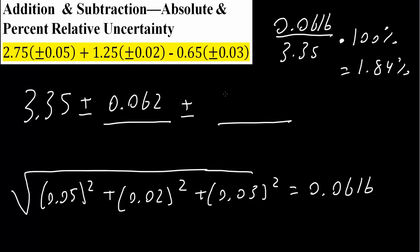So we write plus or minus 2% here, and this right here is the final answer, where 0.062 is our absolute uncertainty, and plus or minus 2% is our percent relative uncertainty.